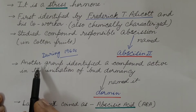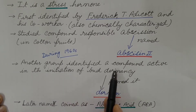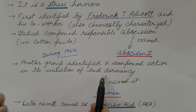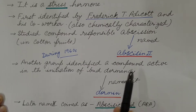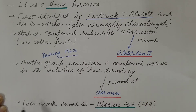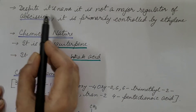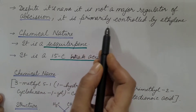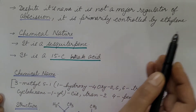In the same time period, another group identified a compound active in the initiation of bud dormancy and named it dormin. It was found that these two were the same compound. Hence, later the name was coined as abscisic acid, that is ABA. Despite its name, it is not the major regulator of abscission — that is primarily controlled by ethylene.